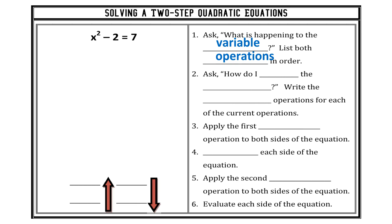If I look through this, I don't see any parentheses. I do see an exponent: x squared. That's the first operation — the first thing affecting my variable. Next, I don't see any multiplication or division, but I do see addition or subtraction of two. That arrow aims upward and describes the equation in terms of the order of operations. That's question one: what's happening to the variable?